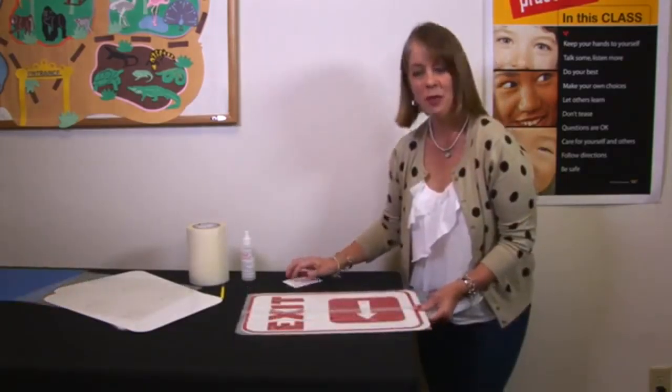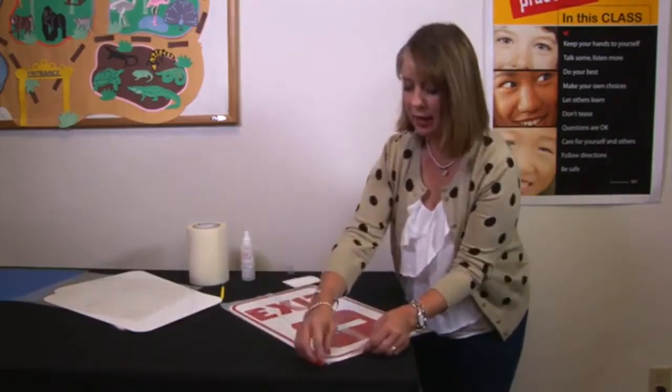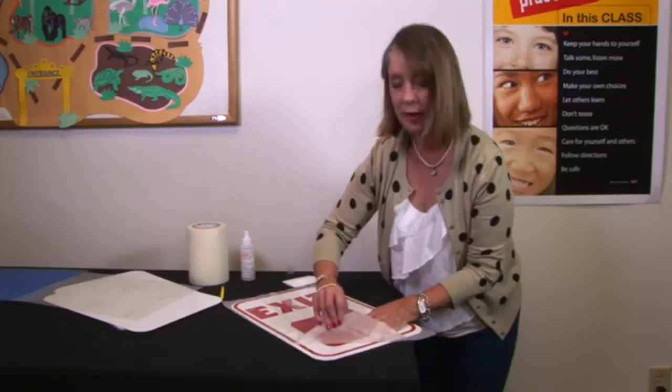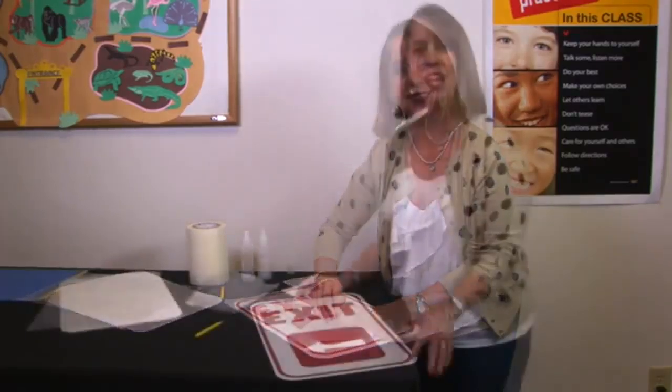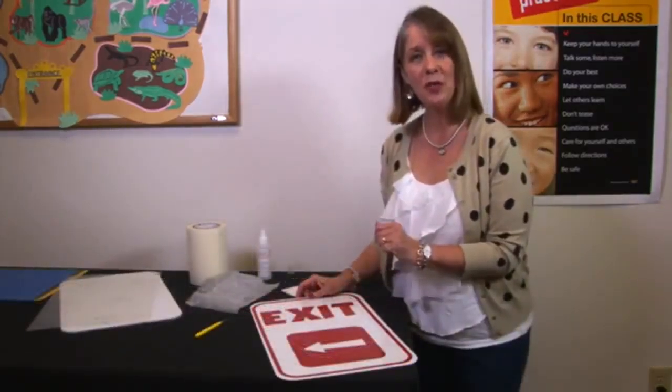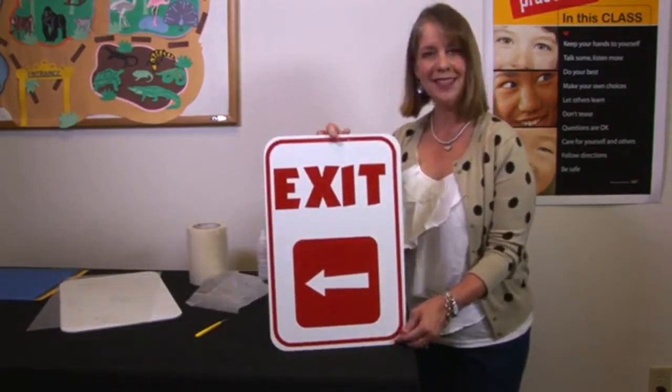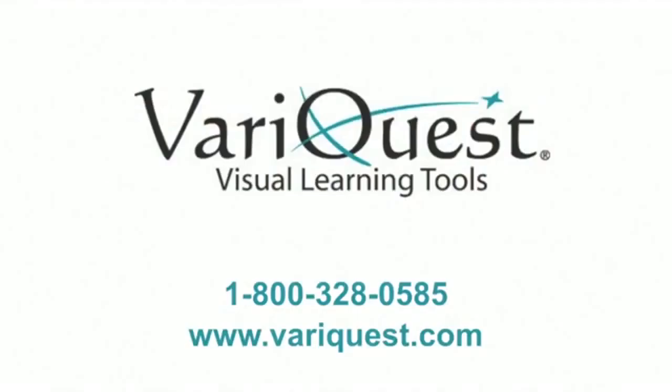Now once you're done with the squeegee go ahead and peel off the transfer tape. Do it gently and you can see how the vinyl adheres to the sign. Once you've removed the transfer tape your final sign will look like this. For more information please contact your local VeriQuest dealer or the VeriQuest team at 1-800-328-0585 or customer service at VeriQuest.com.